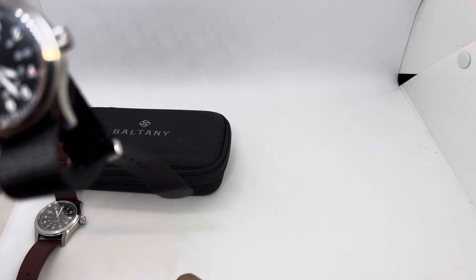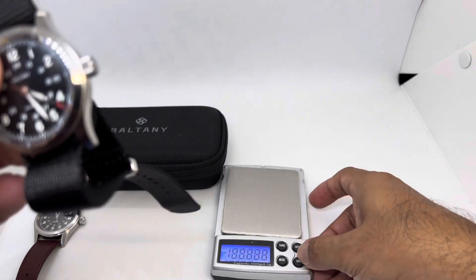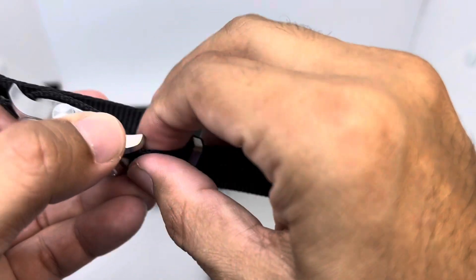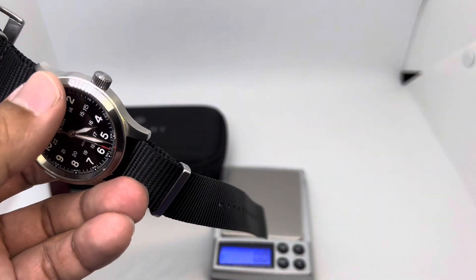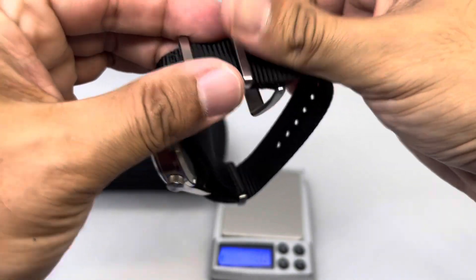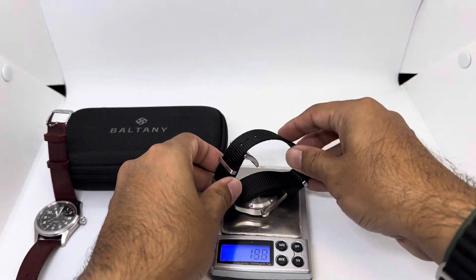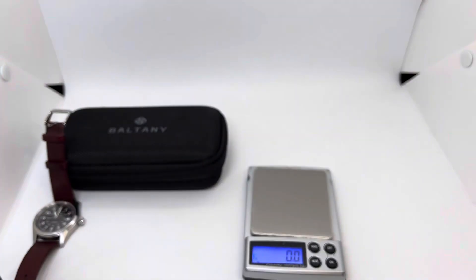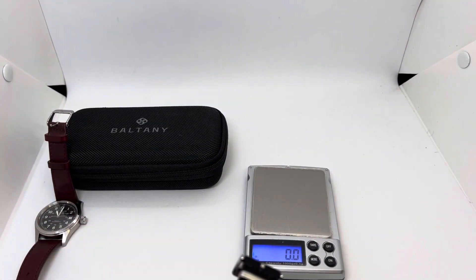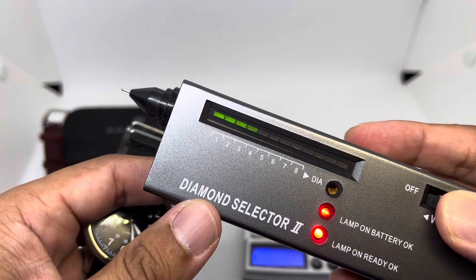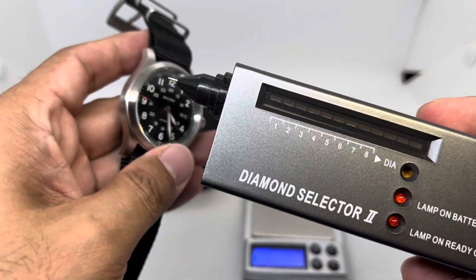Lug to lug is about 46mm, yep 46.8mm, and the lug width is 20 millimeters. I've got this version with the NATO strap. You can also choose it on a leather strap, but I already have a few leather straps, so I just went for the cheapest version available. On this one you've got 81 grams, so very lightweight.